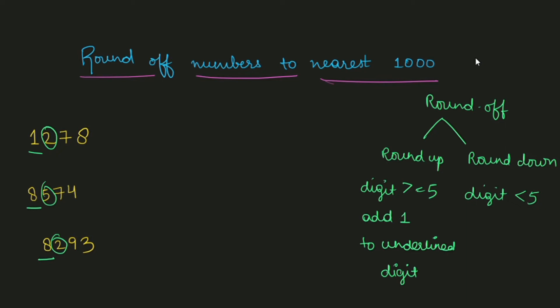So in this case we are rounding off to the thousands place, so we compare the digit at the next smaller place value, which is the hundreds place. For the first number, the hundreds digit is 2. We compare 2 to 5 — 2 is smaller than 5, so we have to round down. In round down, we add nothing to the underlined digit; it stays as it is.